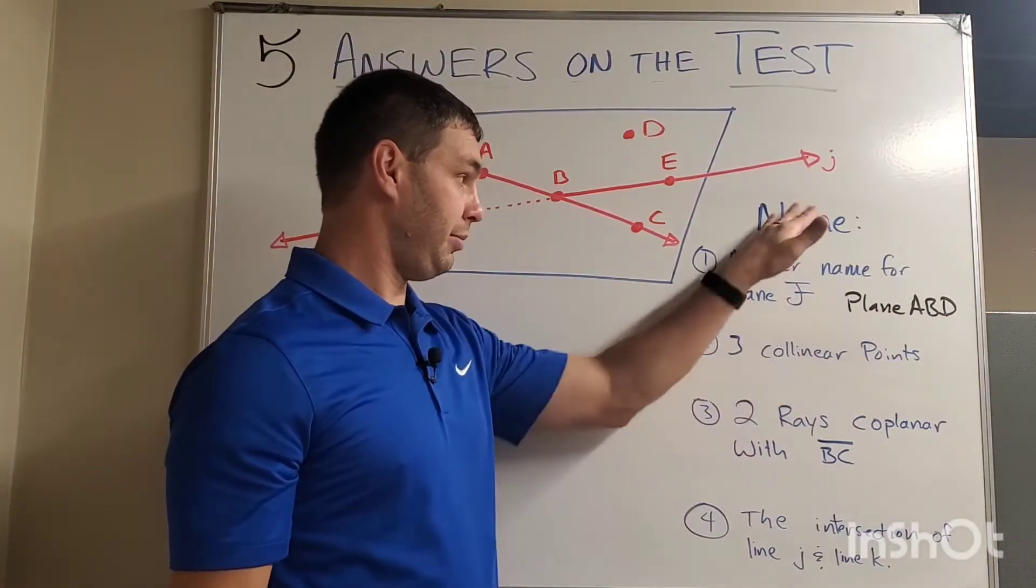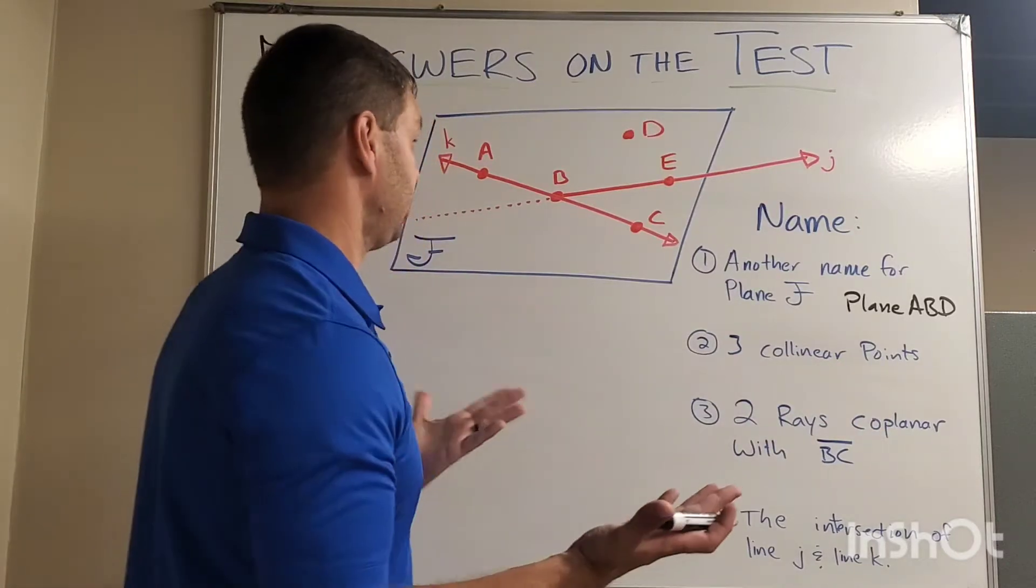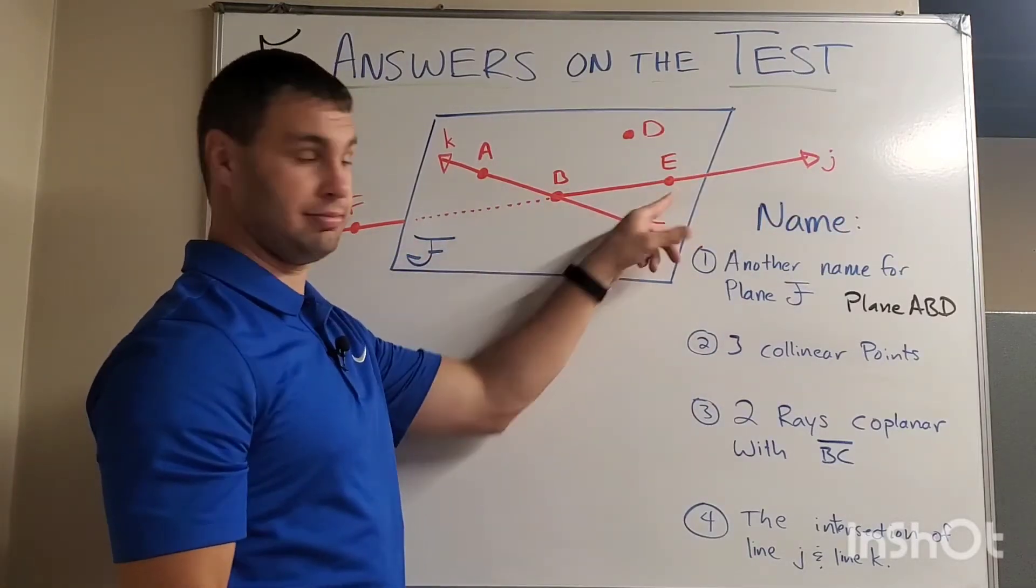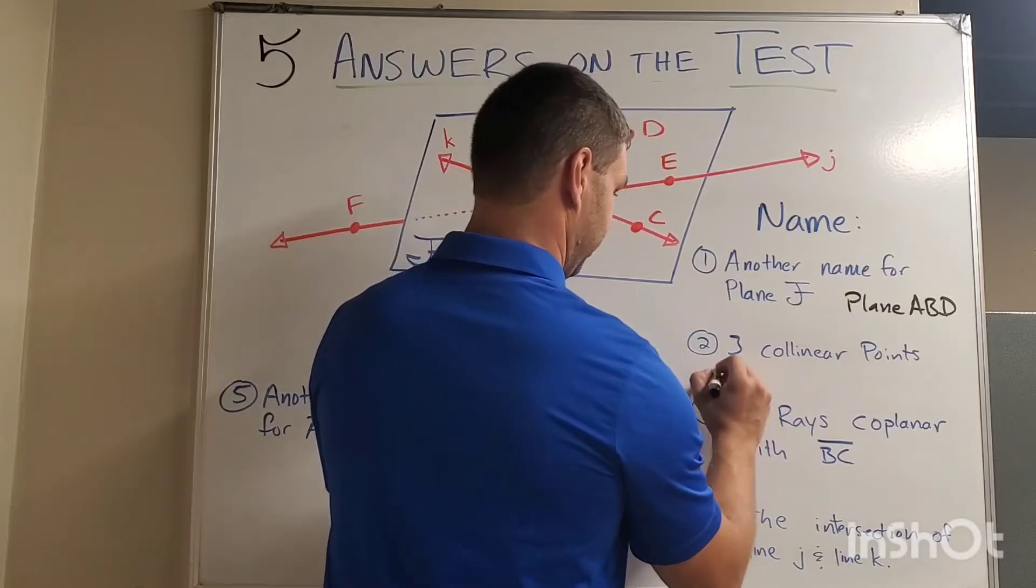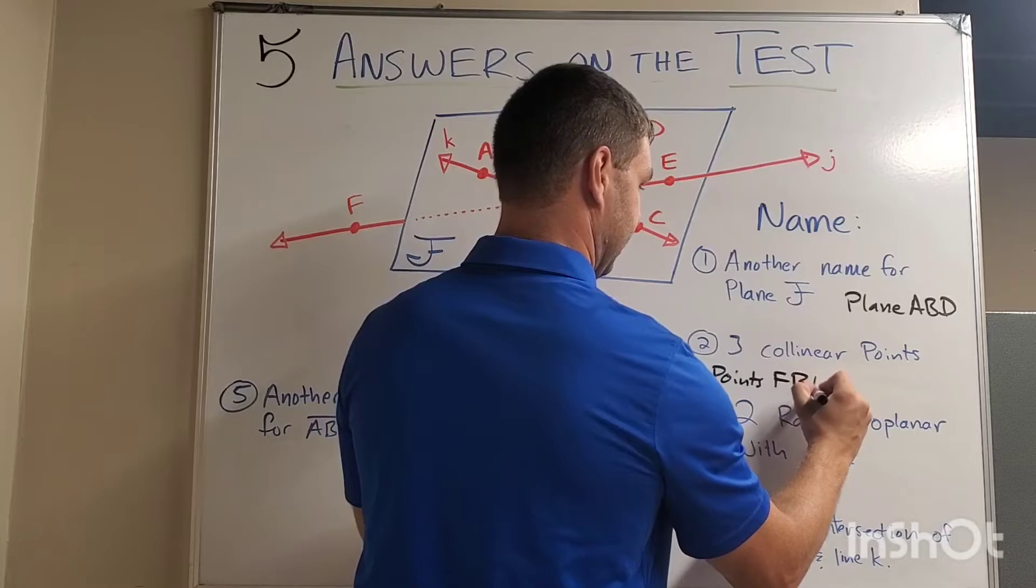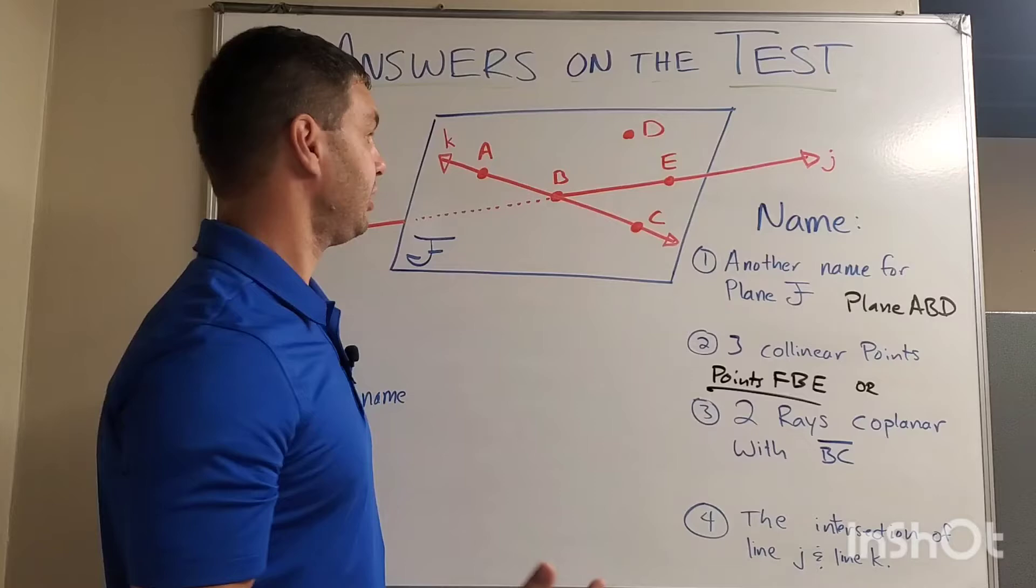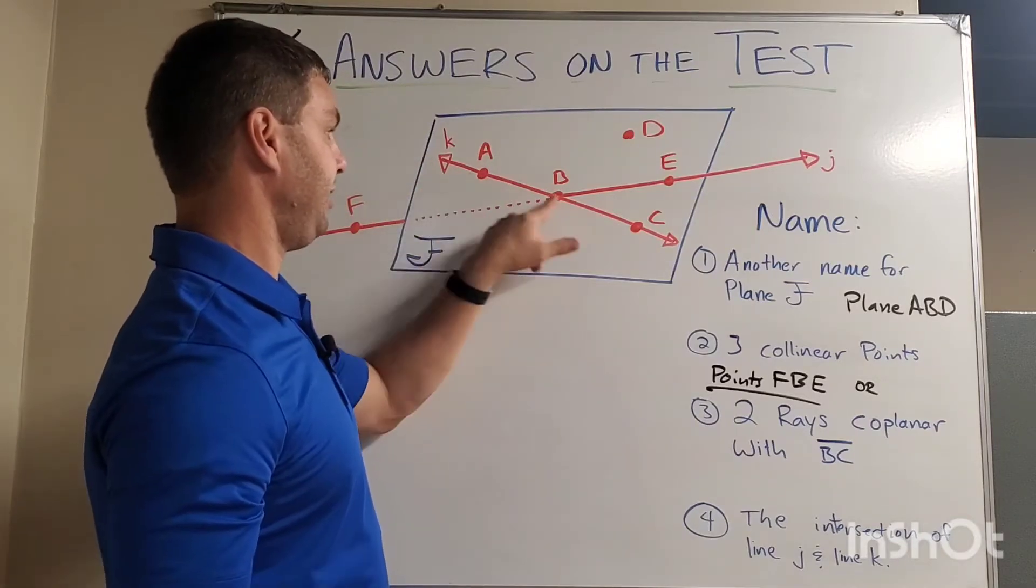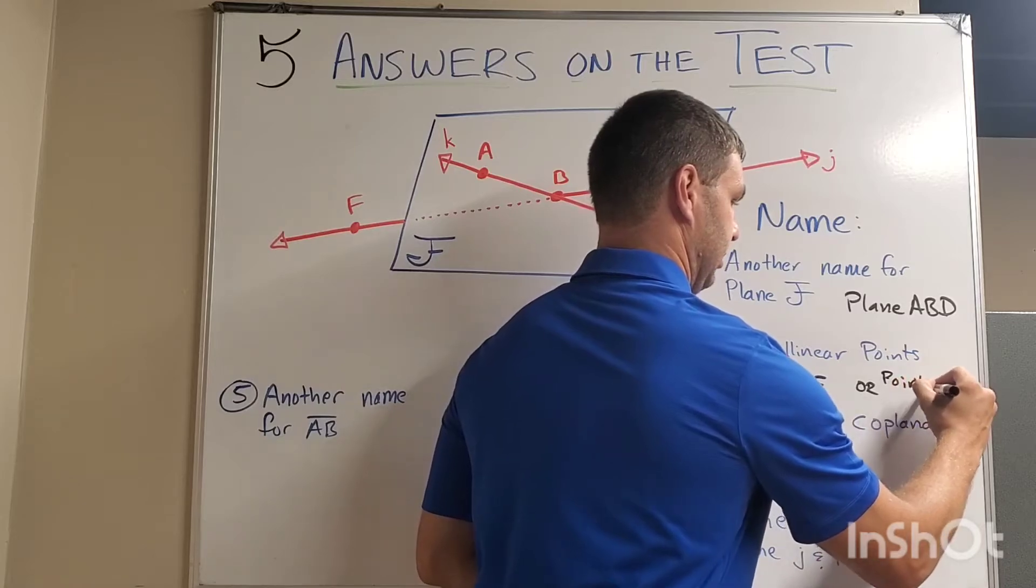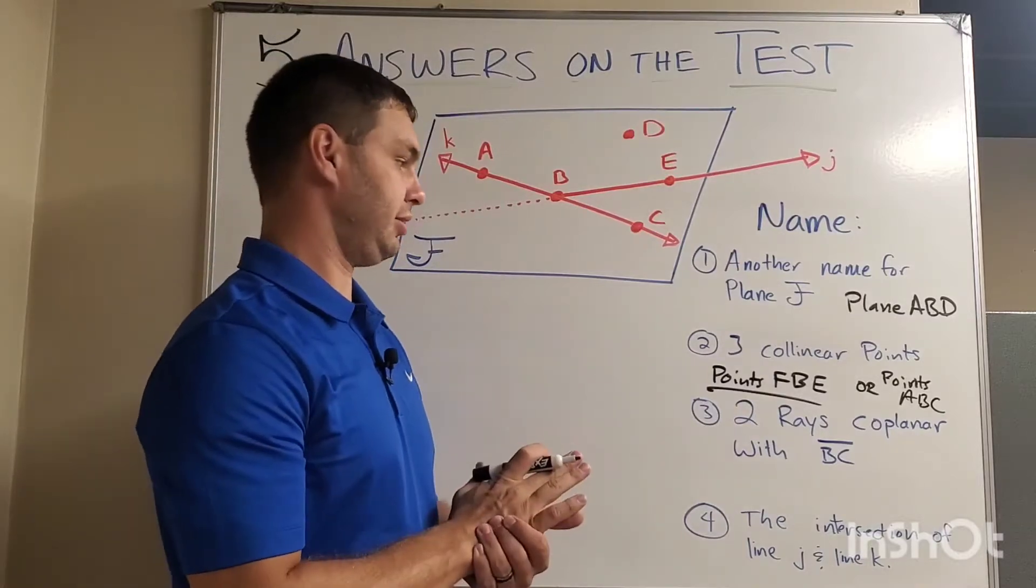Number two, name three collinear points. That just means that the three points are on the same line. We have a couple choices here. We could use line J, where we have point F, B, and E. So we could say one of them, points F, B, and E. That's a perfectly acceptable answer. Or, another answer is your other line. Line K has A, B, and C. So let's say points A, B, and C. Both of those would be perfectly good answers.